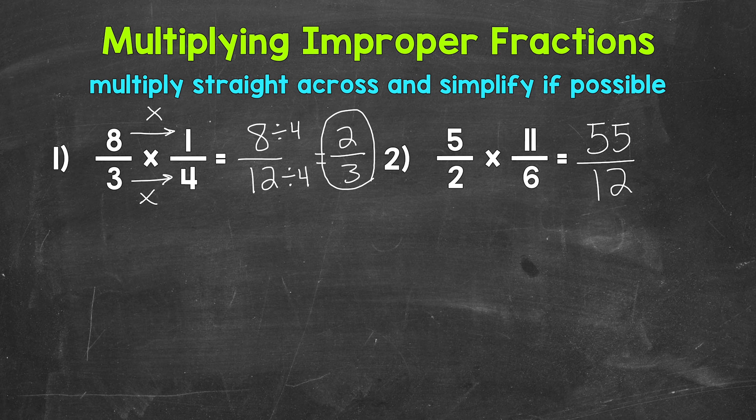We end up with 55 twelfths, which is an improper fraction. Let's convert this to a mixed number for our final answer. We do that by dividing.